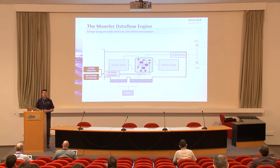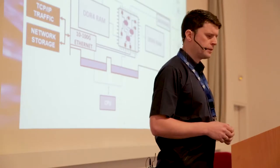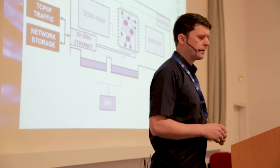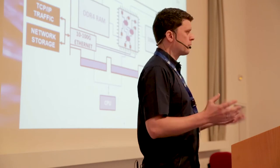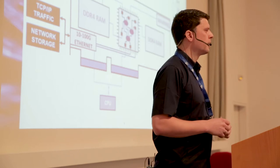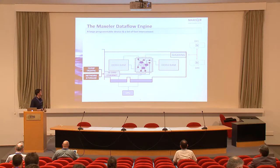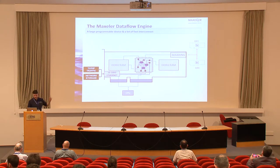So what does the Dataflow Engine actually look like? It's essentially quite simple: we take a large FPGA, which gives us a configurable spatial substrate for computation, and we surround it with as much memory as we can. We use as many high-speed interfaces as possible — PCIe Express connecting to the CPU, networking interfaces, and a thing called MaxRing, which is a direct connection to other DFEs. That's important — I'll come back to that.